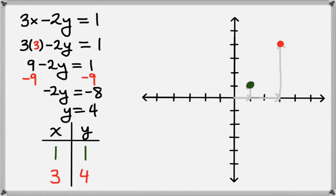Now that we have two points, we can draw the straight line that goes through those points. And that is the graph of the equation 3x minus 2y equals 1.